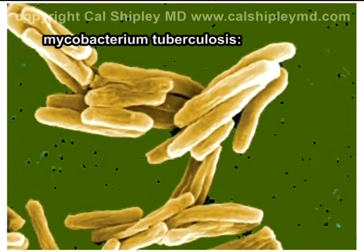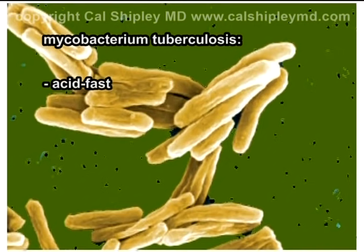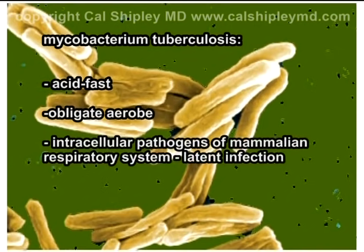Mycobacterium tuberculosis is a member of a genus of bacteria whose defining characteristic is acid fastness, defined as the ability to resist decolorization when an acid-alcohol mixture is applied after appropriate staining. M. tuberculosis is an obligate aerobe and is primarily a pathogen of the mammalian respiratory system. It is an intracellular pathogen — that is, it is capable of surviving within the cells of an infected host. This characteristic is the key to its ability to cause latent infection.